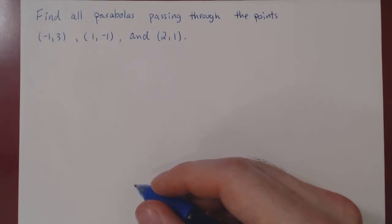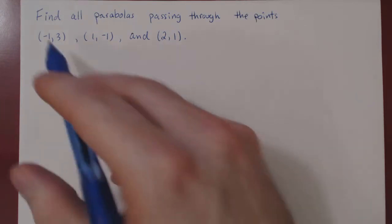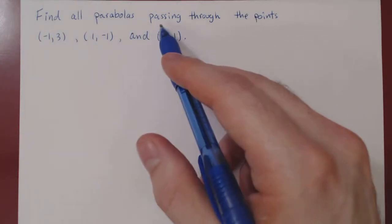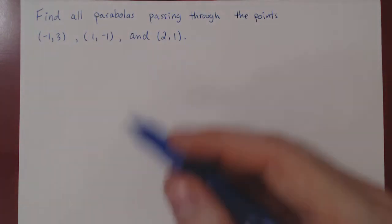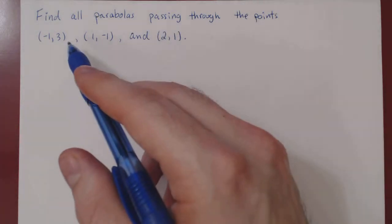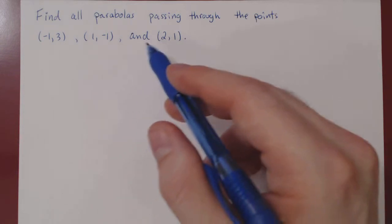In this video, we will consider an application of linear systems. So here's the problem. We want to find all parabolas, so a quadratic equation, passing through the points (-1,3), (1,-1), and (2,1).